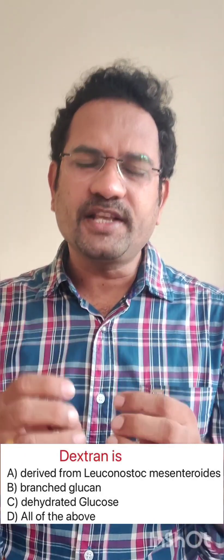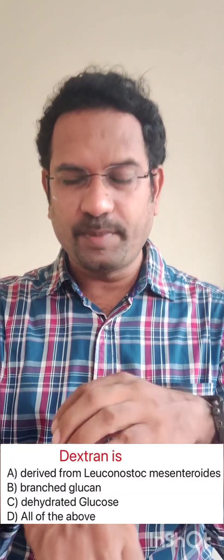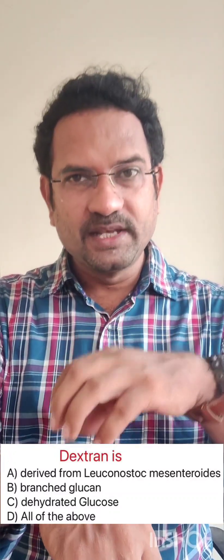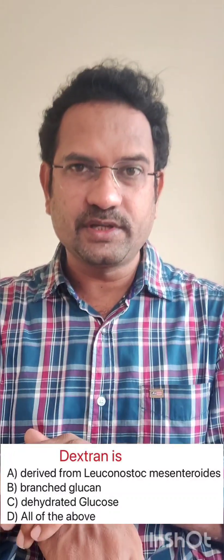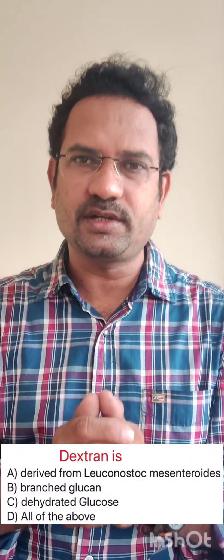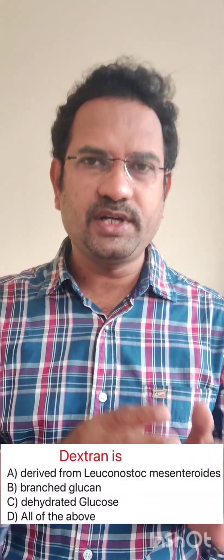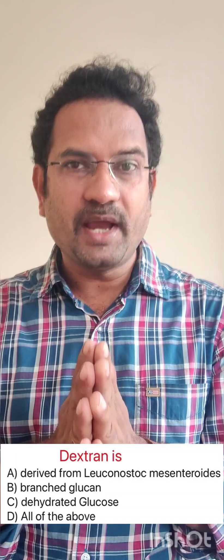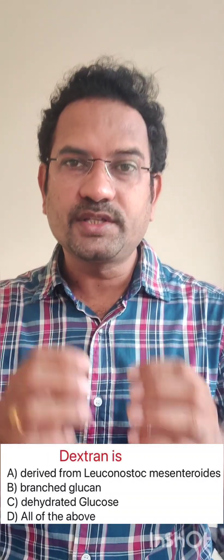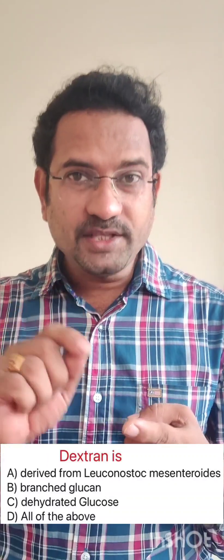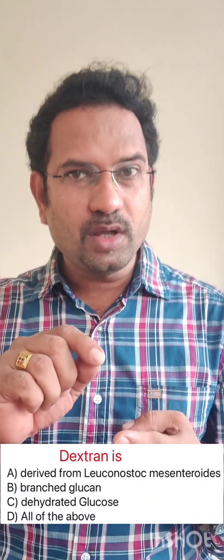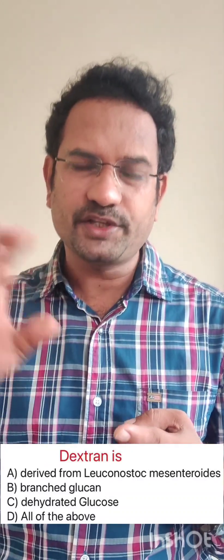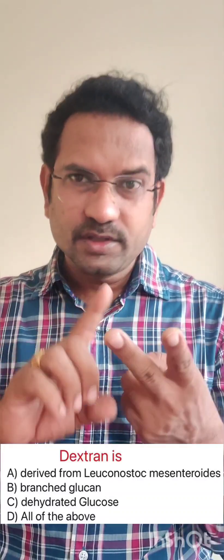Dextran is a plasma substitute. When people lose plasma during burns, the plasma leaks out and a plasma substitute is given — that is dextran. Dextran is available as dextran 40 and dextran 70. It is derived from a bacterium called Leuconostoc mesenteroides. It is a branched glucan — glucan being a polymer of dextrose.